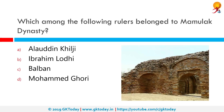Which among the following rulers belongs to the Mamluk dynasty? The correct answer is Balban. Ghiasuddin Balban was the ninth Sultan of the Mamluk dynasty of Delhi. Ghiasuddin was the Vazir and heir of the last Shamsi Sultan, Nasiruddin. He reduced the power of the treacherous nobility and heightened the stature of the Sultan.